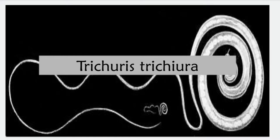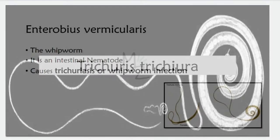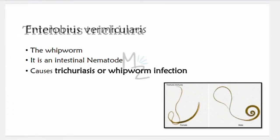Before starting today's video, I like to mention that these videos are meant for educational purposes. Things and treatments may change with time. If I get anything wrong or miss anything, your input is always welcomed in the comments section. Trichuris trichiura is also called the whipworm. It is an intestinal nematode.